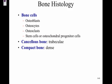Osteoblasts help build bone. If your blood calcium levels get too high, osteoblasts take calcium out of your blood and build more bone. If blood calcium levels get low, they break down bone and release calcium and phosphorus into your blood. Next we'll look at cancellous and compact bone.